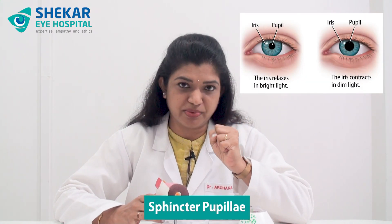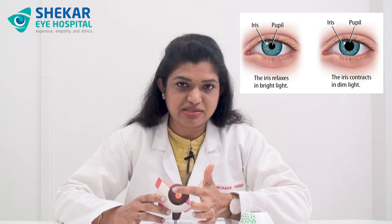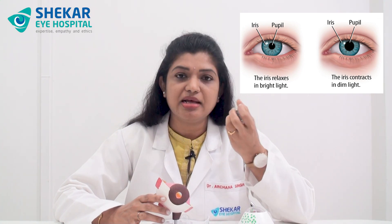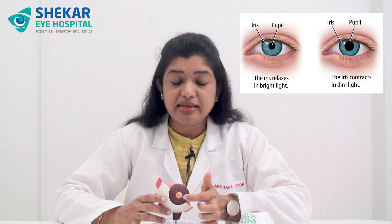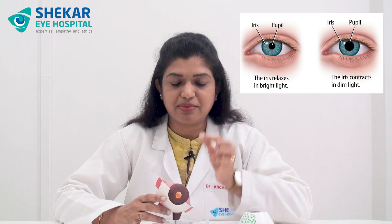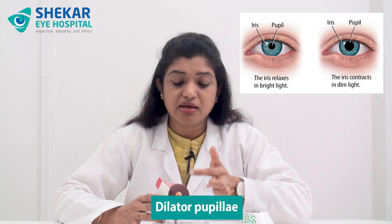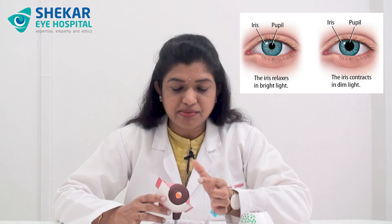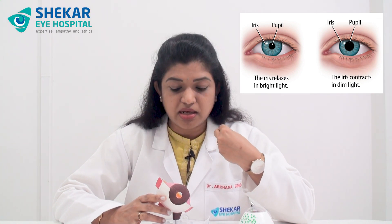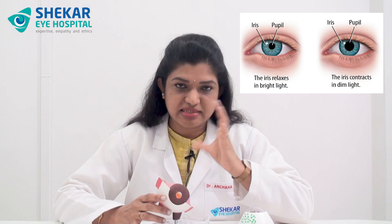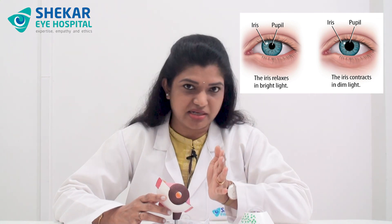There are various muscles which help in this constriction and dilation. Something called the sphincter pupillae contracts to constrict the size of the pupil in bright light, so that lesser amount of light enters the eyeball. In dim light conditions, the dilator pupillae dilates the pupil so that more light enters the eyeball and you are able to see in dark conditions.